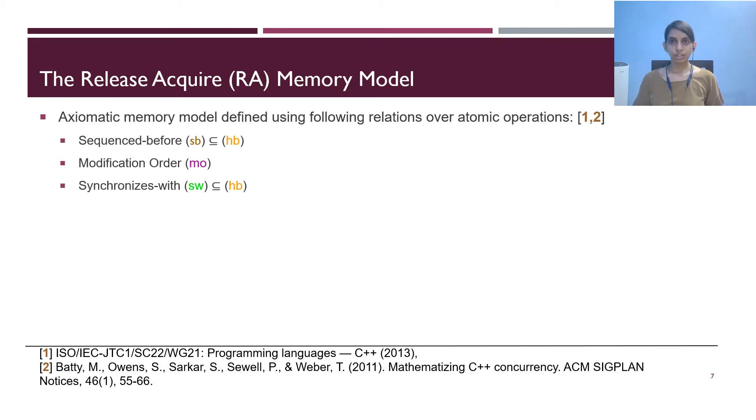Synchronizes with or SW is another relation. Whenever a load operation reads from a store operation, they both synchronize. This synchronization introduces happens before relation from any alpha ordered before the store to any beta ordered after the store. The next relation is happens before RHP. It is defined as the transitive closure of SW union SP.